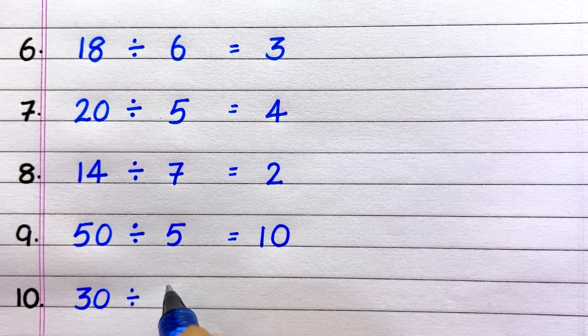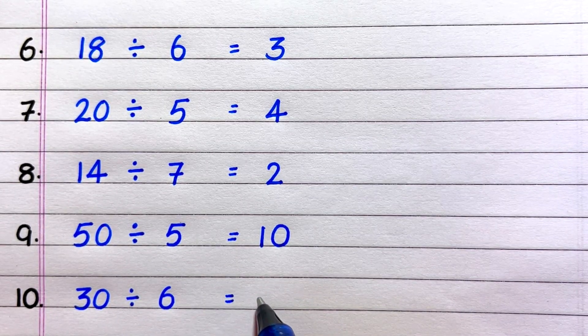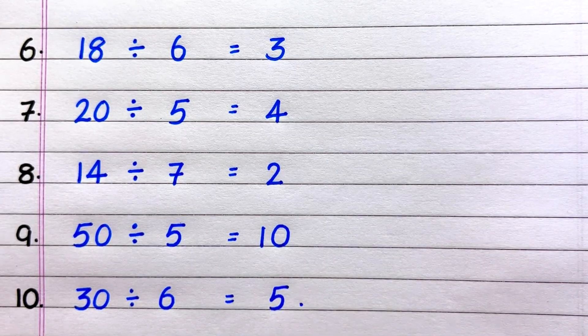Last one, tenth, it is 30 divided by 6 equals 5.